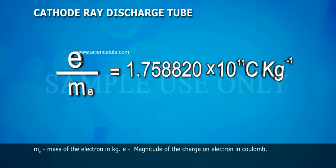me: mass of the electron in kg. e: magnitude of the charge on electron in Coulomb.